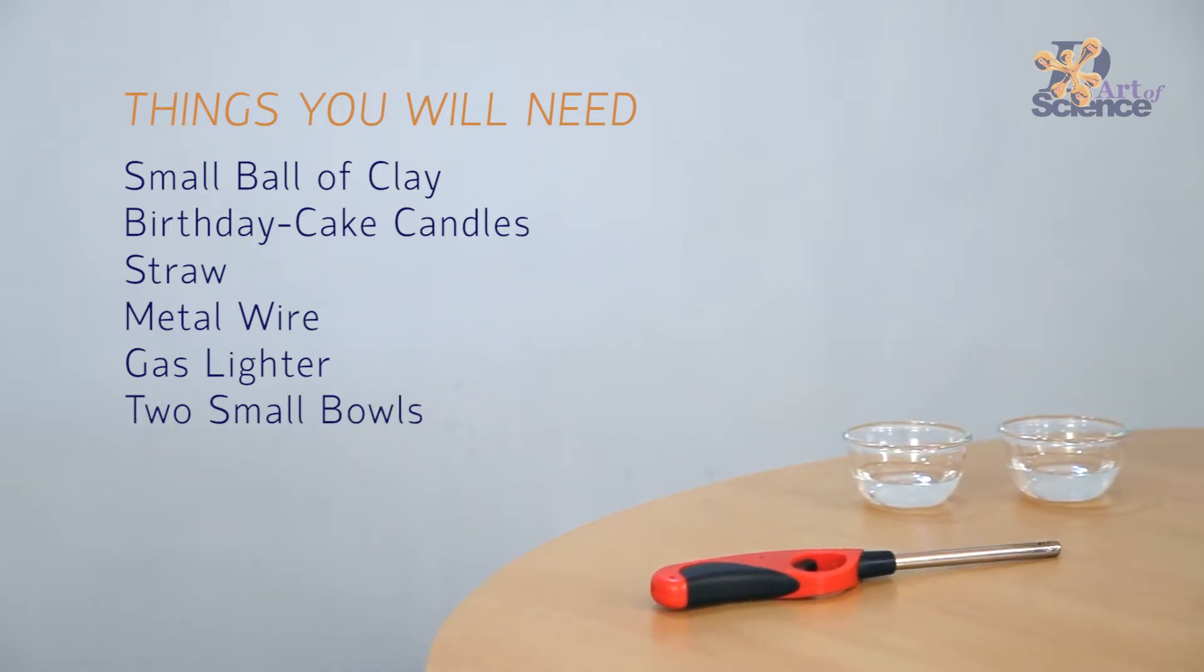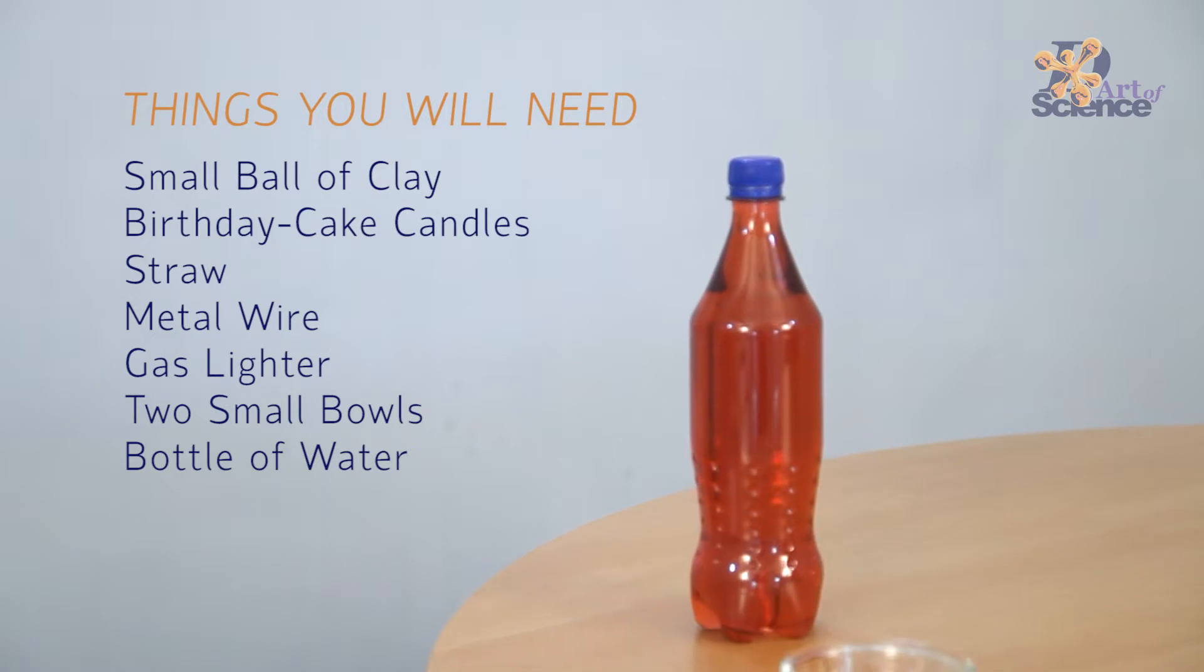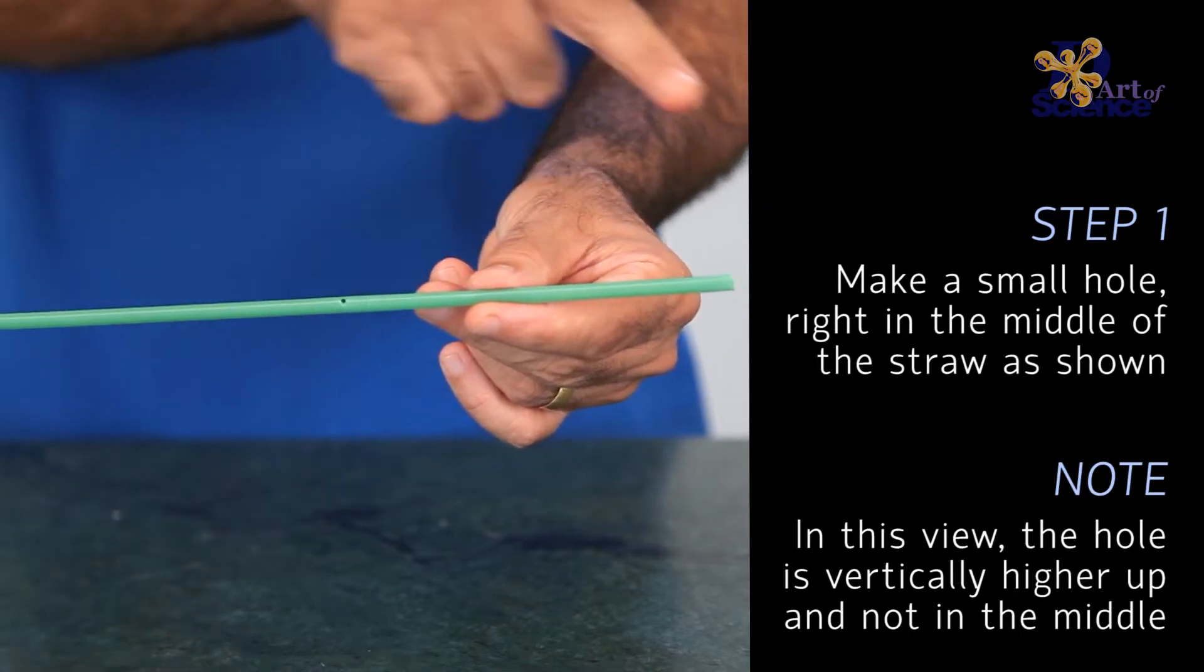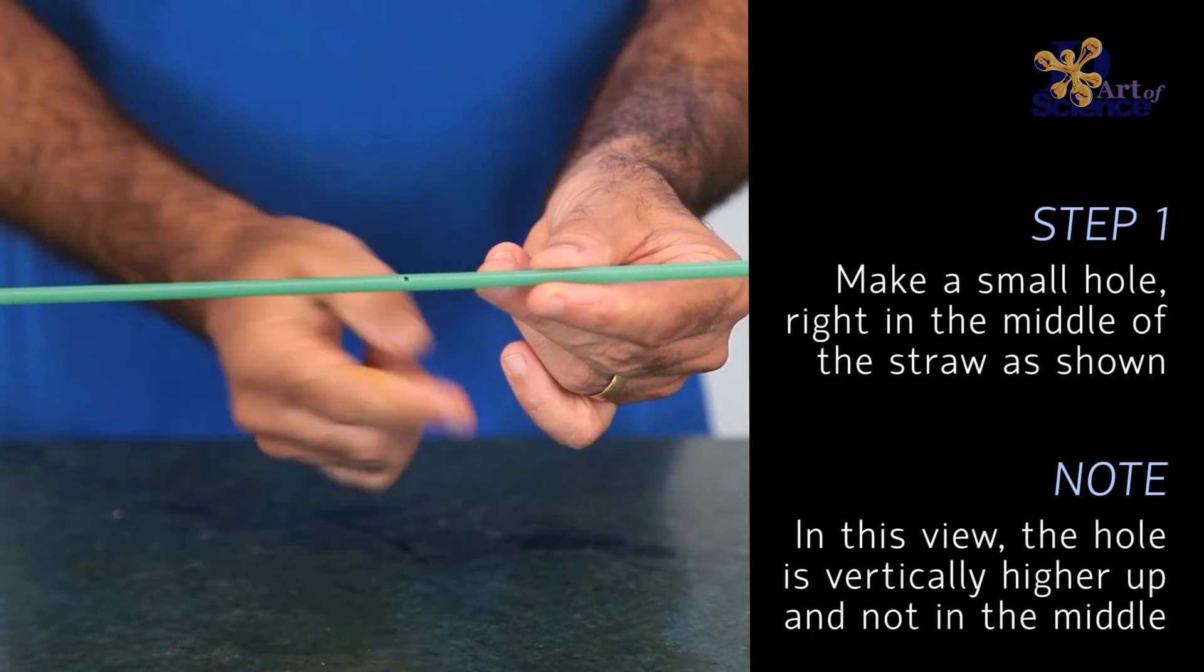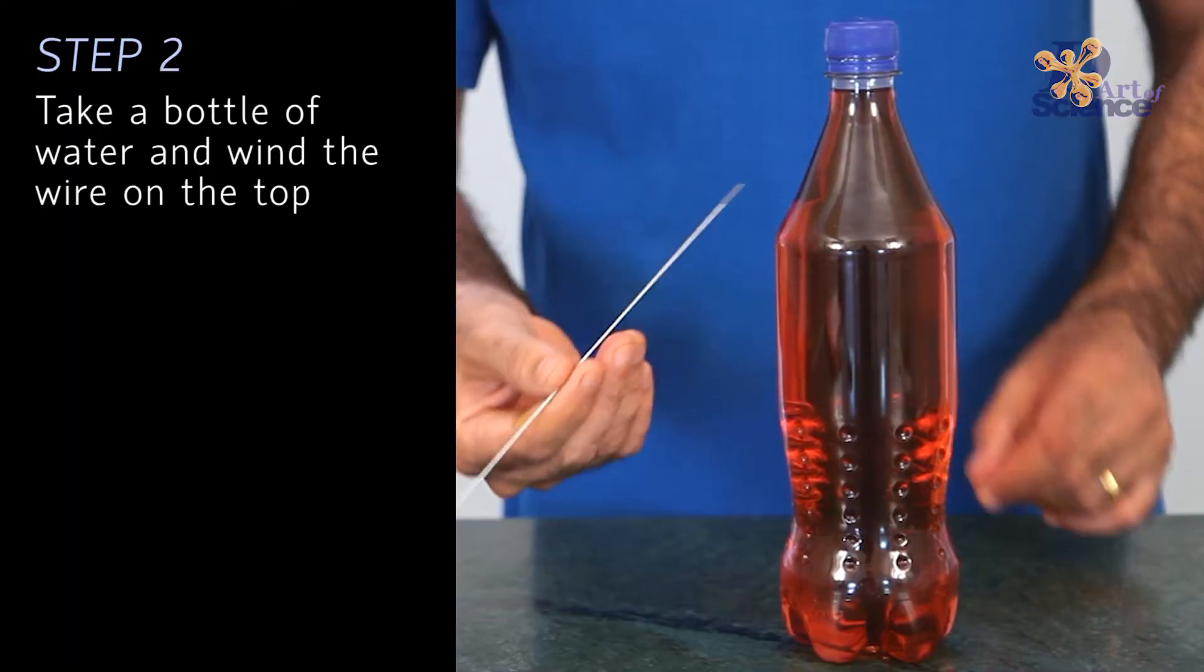This experiment mixes simple concepts of levers and balance to give us this fascinating outcome. So a seesaw is a type of first-class lever where the point of pivot is between the load and the effort.